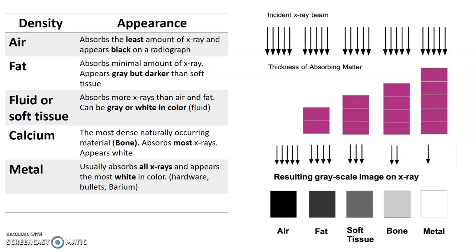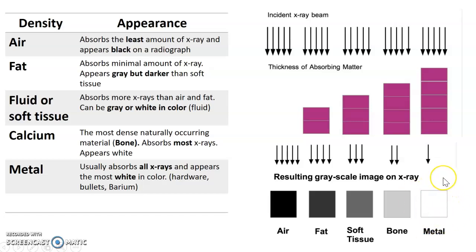Density — know these densities in order: air, fat, fluid or soft tissue, calcium, metal. Their appearance depends on the thickness of the absorbing matter and will appear on a gray scale — air is black, metal is white. Know those because they will potentially be on your boards. You may have to do a drag-and-drop question, arranging from least dense to most dense.